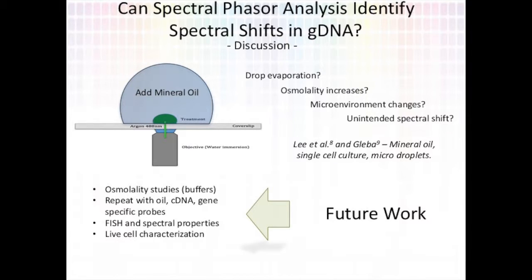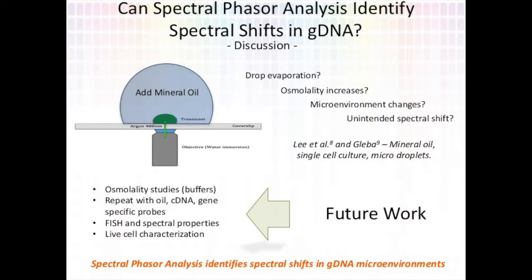There have been studies that use mineral oil to cover micro-droplets during single cell culture. It is feasible that mineral oil be used in future studies to prevent drop evaporation. These studies should be more robust and could include analysis with cDNA and the use of gene-specific probes to determine hybridization to a target. Future work could also extend to osmolality studies specifically to determine if osmolality increases or decreases change the microenvironment and therefore change spectral shift. Also, the use of existing technologies like FISH could be used to determine if spectral profiles change between hybridized and non-hybridized probes. Finally, this work could extend to live cell characterization, to determine if spectral phasor analysis is able to elucidate the spatial location of a gene in a live cell. While more work needs to be done and certain factors need to be mitigated, it is at least clear that spectral phasor analysis is able to identify spectral shifts in genomic DNA microenvironments.